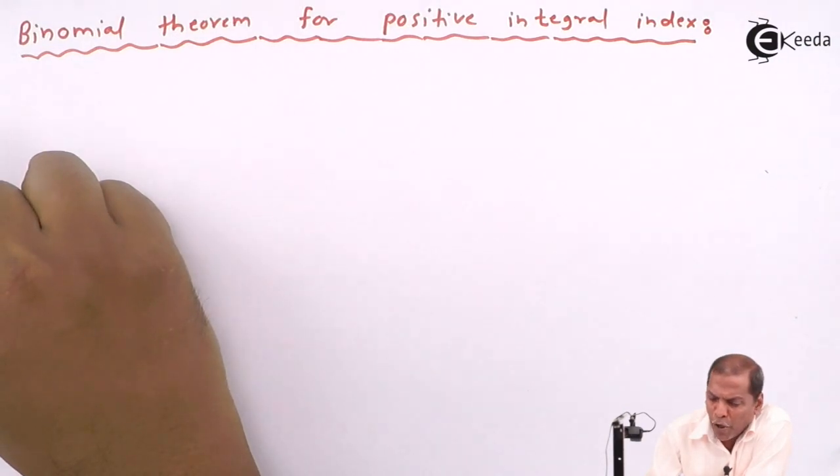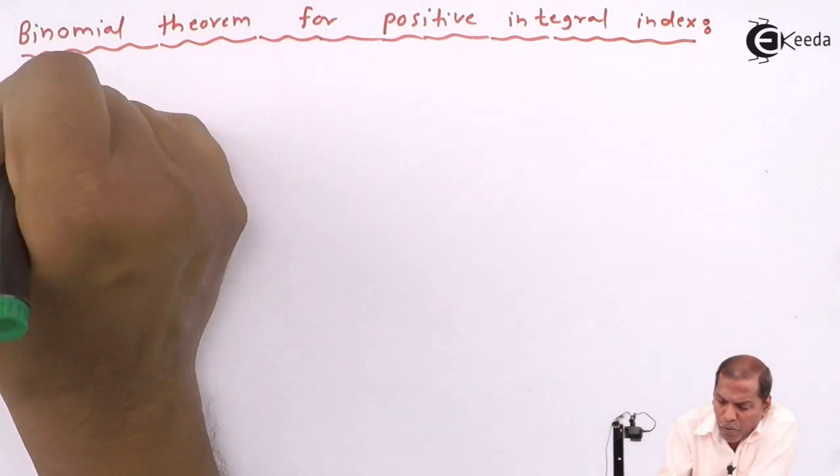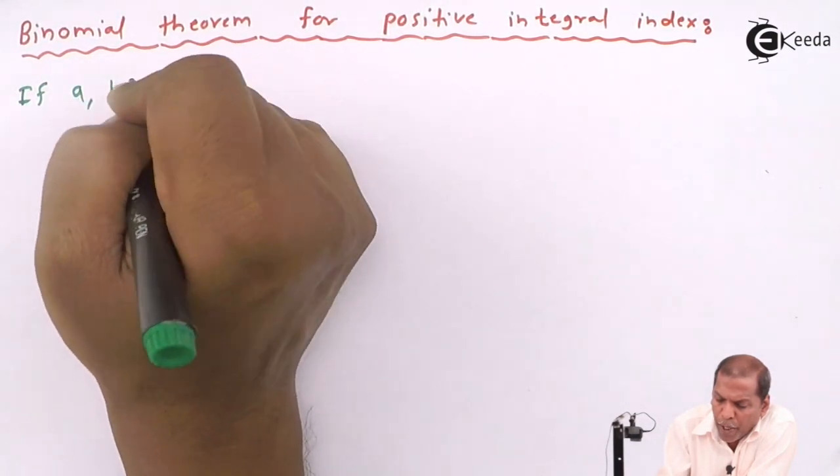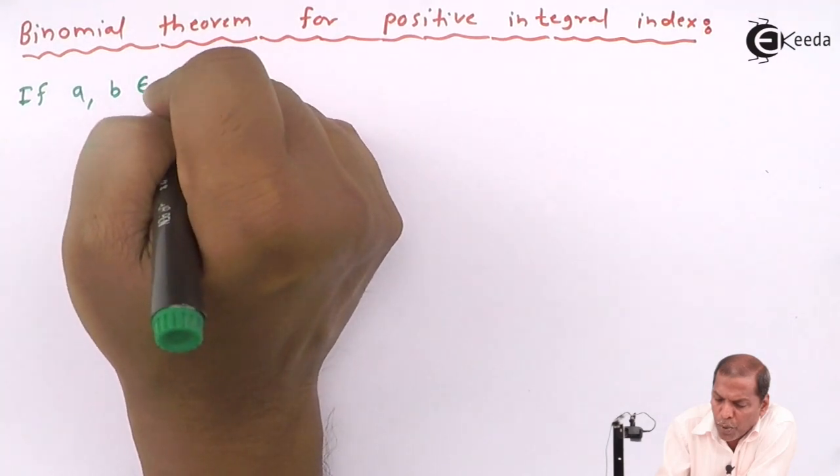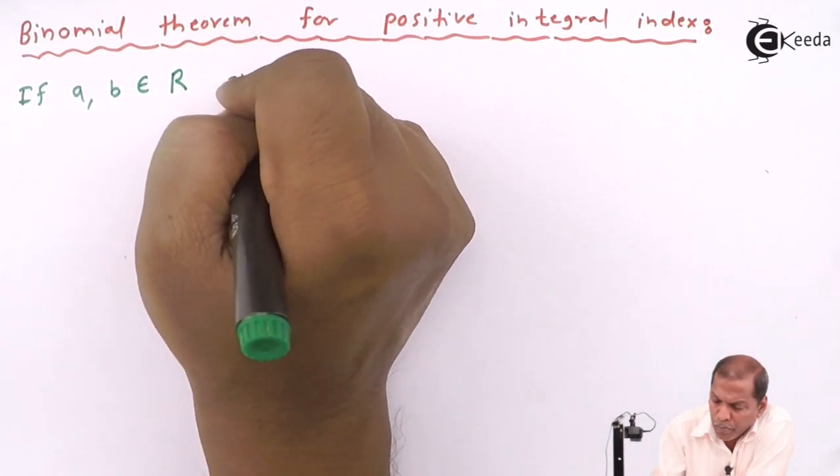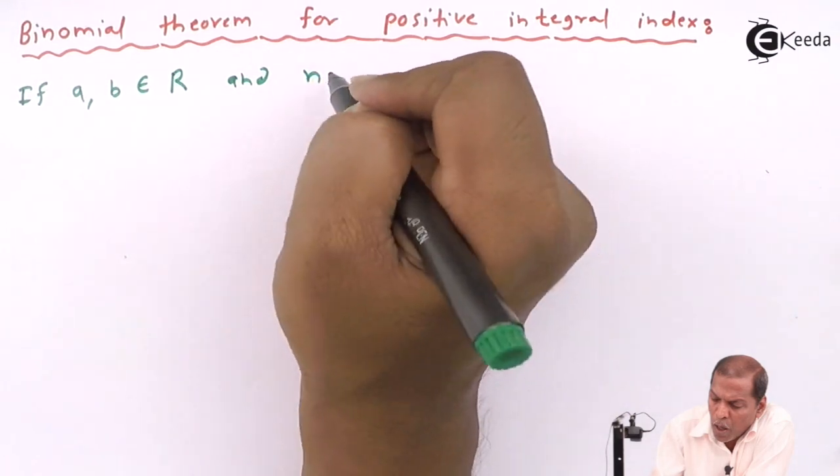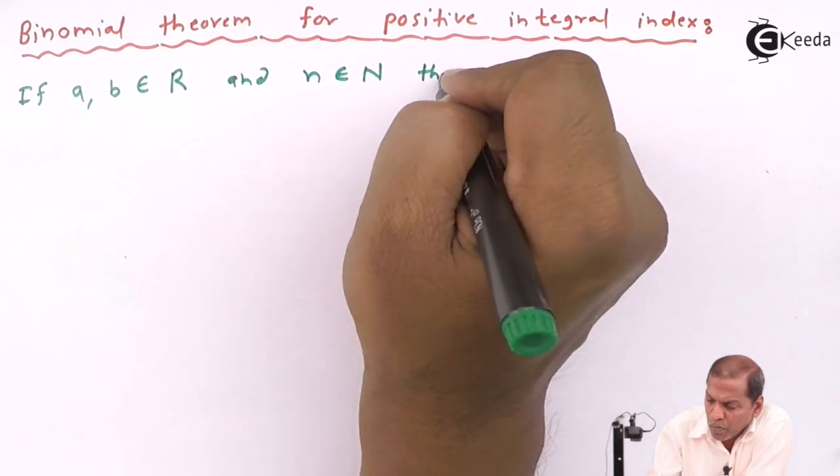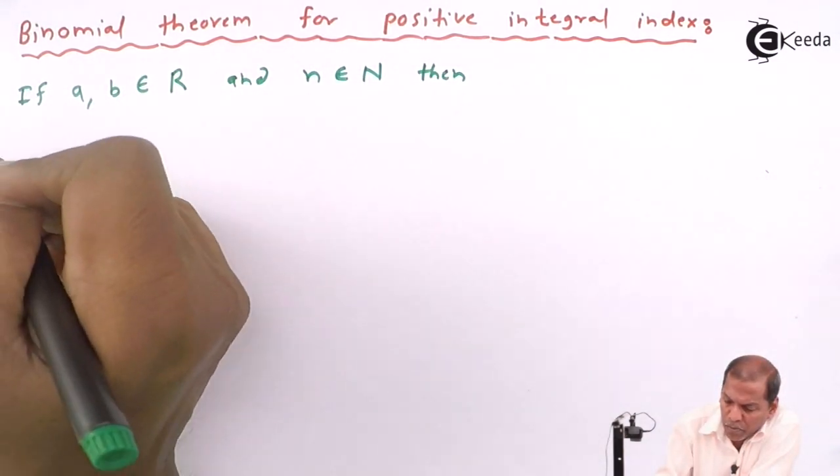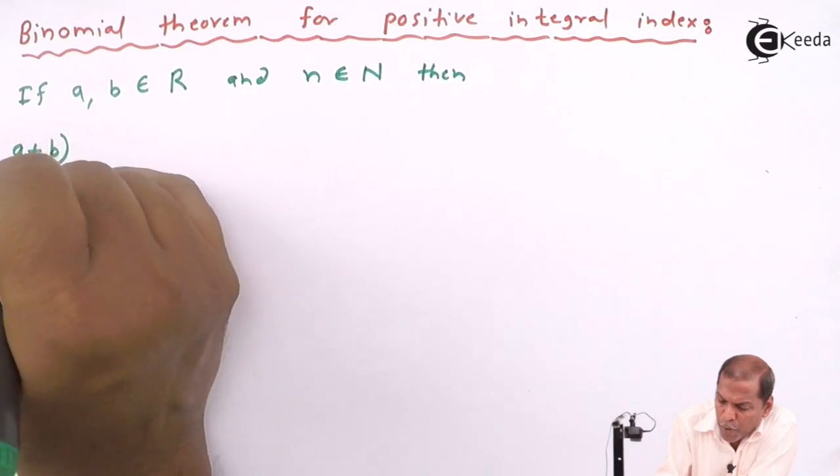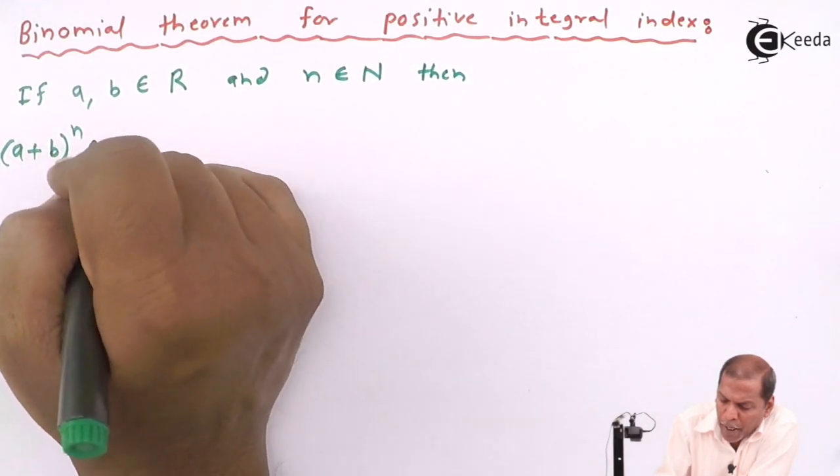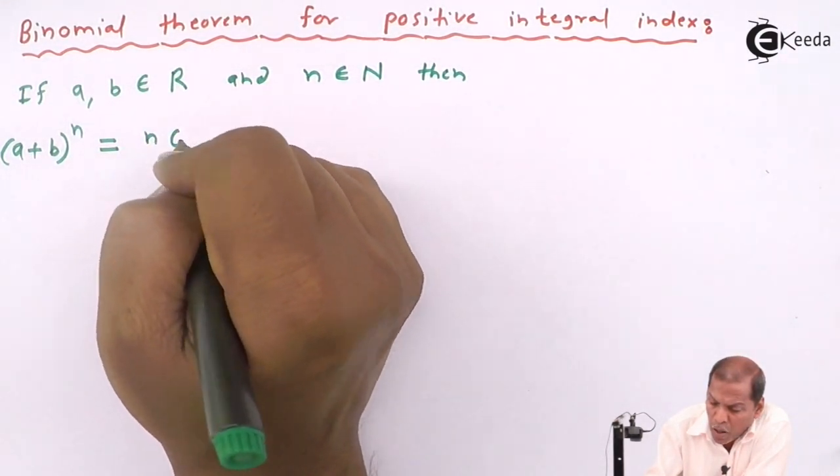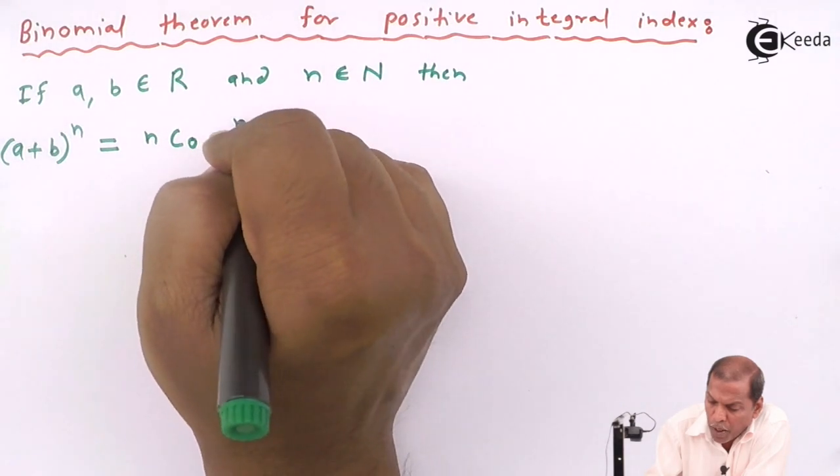The binomial theorem states: if a and b belong to the set of real numbers and n belongs to the set of natural numbers, then (a+b)^n equals nC0 a^n b^0 plus nC1 a^(n-1) b^1 plus...